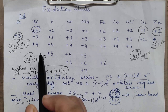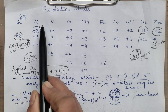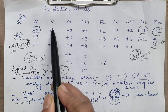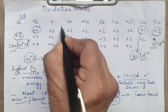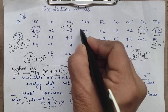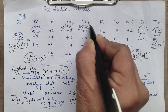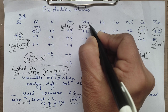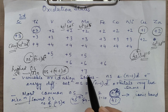For example: if configuration is Ns2 N-1D2, there are 2 unpaired, so 2 unpaired plus 2 from Ns gives total 4 — maximum oxidation state is 4. Similarly, 3 unpaired plus 2 gives 5. Chromium's configuration is 4s1 3d5, so 5 plus 1 gives total 6. For Mn, configuration is 4s2 3d5 — so 5 plus 2 equals 7. The maximum oxidation state shown by Mn is +7.